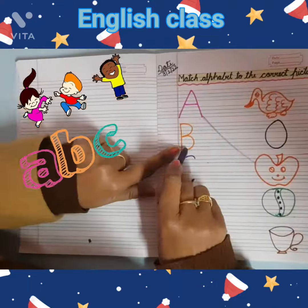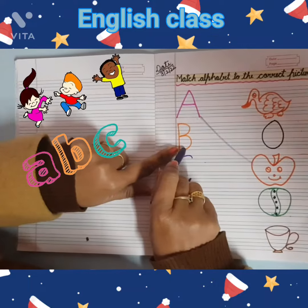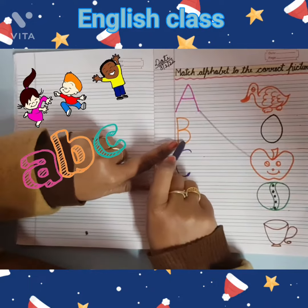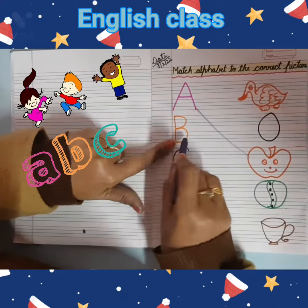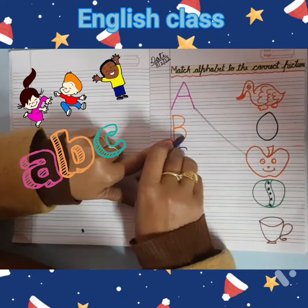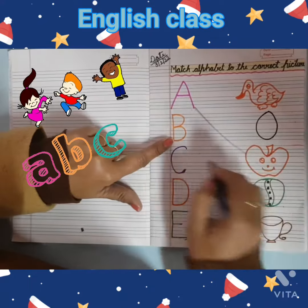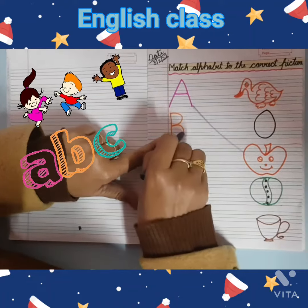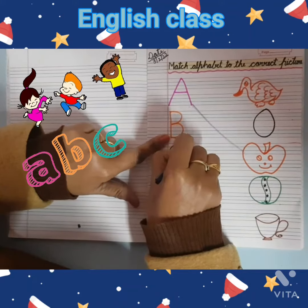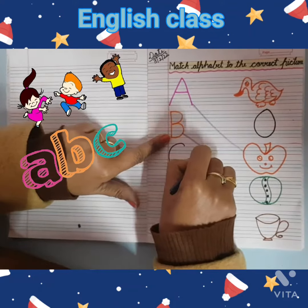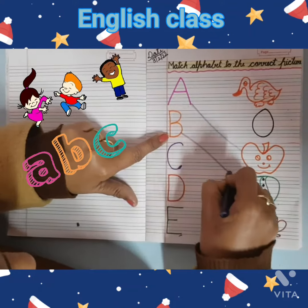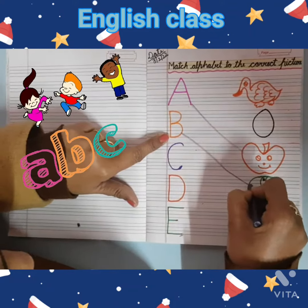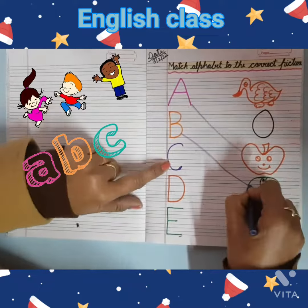What is this? B. And B for ball. Look, where is ball? B for ball is here. Next?